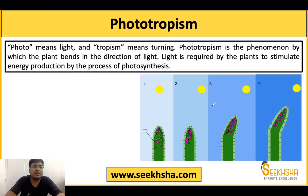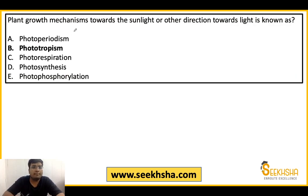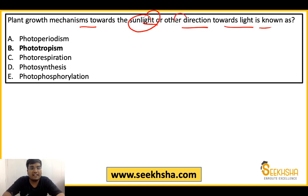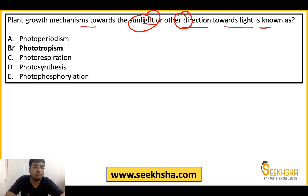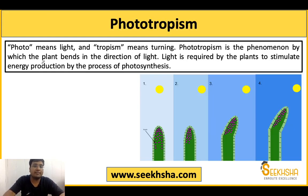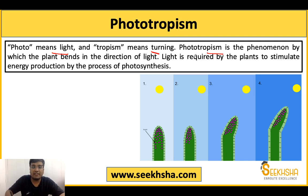Next question: plant growth mechanism towards sunlight or other light directions is known as what? It is not just about sunlight — if there is any artificial source of light, the plant will also grow toward that direction. The direction toward the light source is what we call phototropism. There are many such tropisms in plant growth mechanisms. In phototropism, 'photo' means light and 'tropism' means turning — so the plant bends in the direction of light.